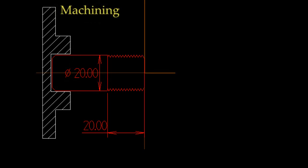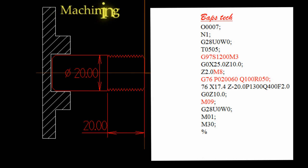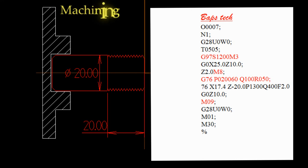Now we can see the M20 rod. This is program number 7: N1, G28U0W0, tool number, G90 S500 RPM M3, G7, M25 Z10, Z2 M088, then the G76 program — first line, second line — G71, M09, G28U0W0, M01, M30. Program finish.